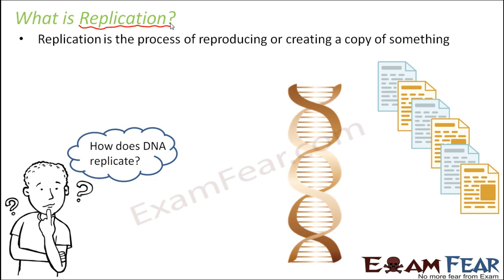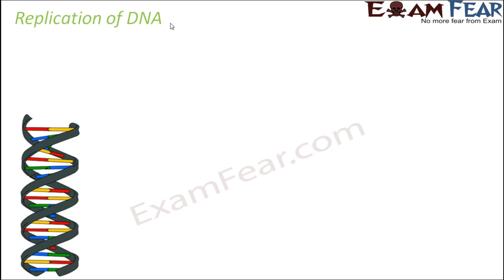So the question is: how does DNA replicate? It is easy to create copies of your notes — you can put them into a xerox machine and get multiple copies. But how does a DNA replicate? DNA is a double-stranded, complicated structure with complementary base pairing sequences. How does it create an exact copy of itself? This is going to be a very important concept to understand.